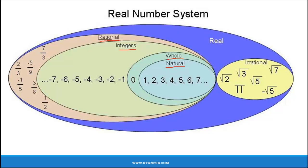That is, every natural number, whole number, and integer is also a rational number. Now comes another set of numbers called irrational numbers. These are the numbers which cannot be written in the form of p/q where q is not equal to 0. That is, every number which is not a rational number is an irrational number.